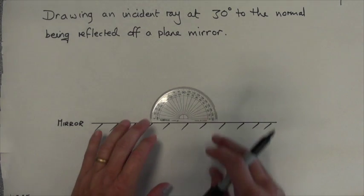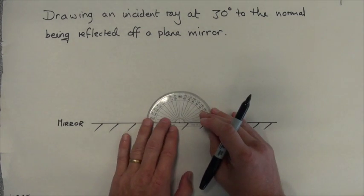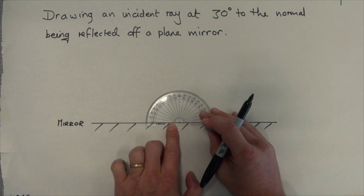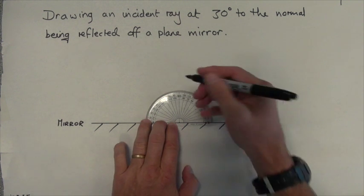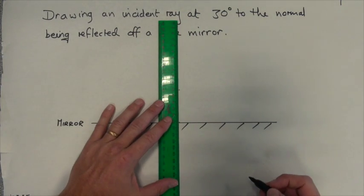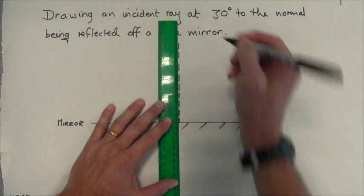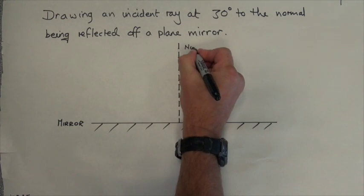Next, I need to use my protractor to draw the normal. Remember, the normal is an imaginary line placed 90 degrees to the boundary surface of the mirror. I mark off 90 degrees with my protractor and draw a hatch line to denote it's an invisible line, and I'll label this 'normal.'